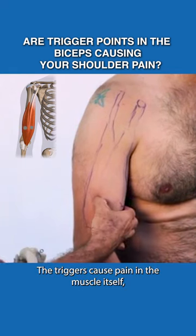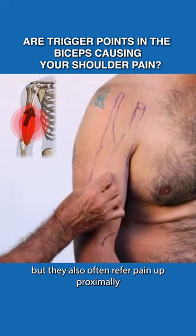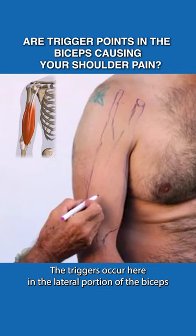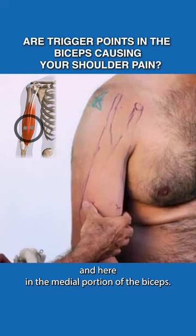The triggers cause pain in the muscle itself, but they also often refer pain up proximally over the front of the shoulder. The triggers occur here in the lateral portion of the biceps and here in the medial portion of the biceps.